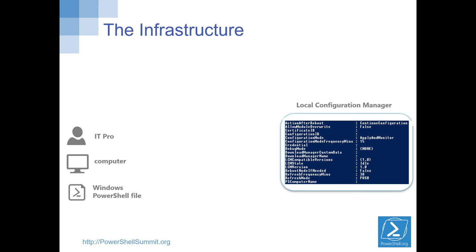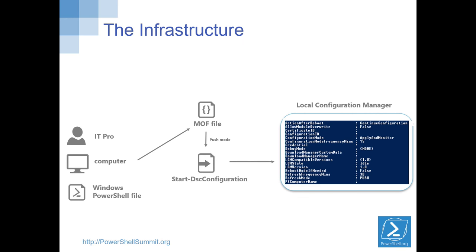A little bit about the infrastructure. As you probably know, there are a few phases to DSC. First, you have to create a configuration — you can do it in PowerShell or basically in any environment — because you have to produce this MOF file which describes to the system how things are going to be configured. For this example, we are using the declarative language in PowerShell to create this MOF file. You can use push mode and push it to the DSC client, or you can use a pull server — that's what we did in this scenario. We created a pull server and instead of manually generating these MOF files, we used automation to put the MOF files onto the server.